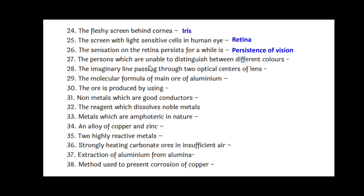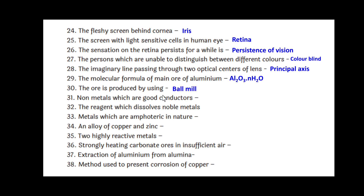The persons who are unable to distinguish between different colors have color blindness. The imaginary line passing through the two optical centers of a lens is the principal axis. The molecular formula of the main ore of aluminum is Al2O3·NH2O. The ore is processed using a ball mill. The non-metal which is a good conductor is graphite. The reagent which dissolves noble metals is aqua regia.